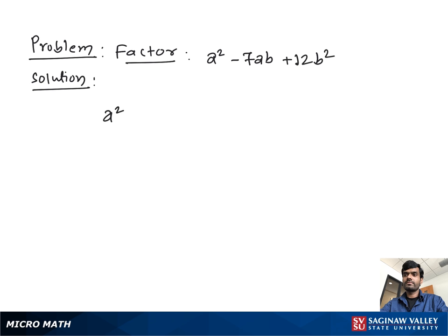Factor a² - 7ab + 12b². First, we multiply the coefficient of a², which is 1, with the coefficient of b², which is 12. We get 12, and find the factors of 12: 1 and 12, 2 and 6, -3 and -4.